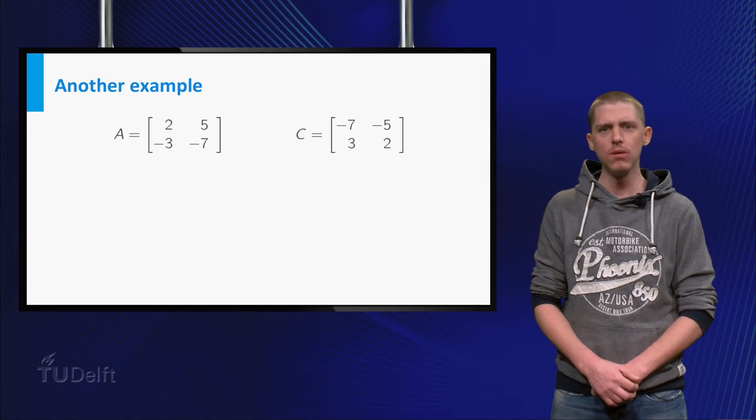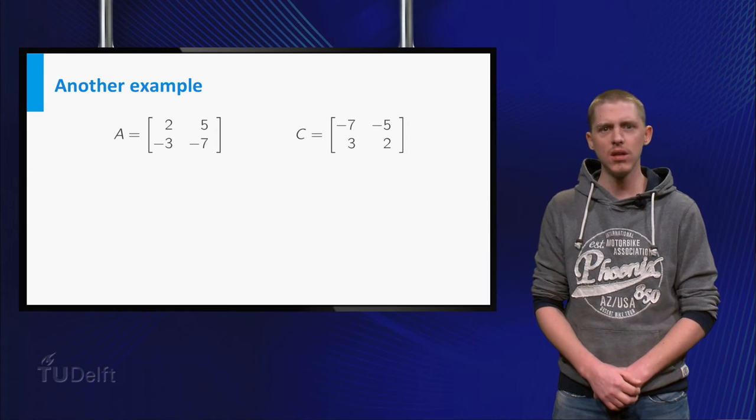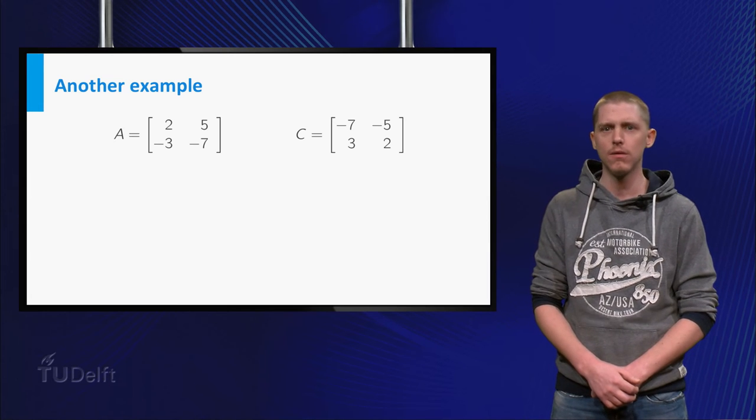The matrix A is 2, 5, minus 3, minus 7, and the matrix C is minus 7, minus 5, 3, 2.